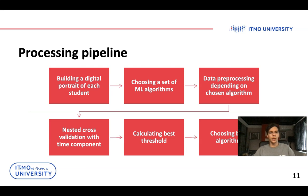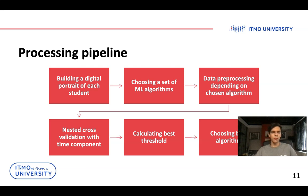After that, we applied artificial intelligence algorithms to predict targets using this digital portrait. First, we built a digital portrait for each student. Then we chose a set of machine learning algorithms and performed data preprocessing depending on the chosen algorithm — for example, different preprocessing pipelines for categorical features in tree-based versus linear algorithms. We then applied nested cross-validation with a time component, so as not to overfit on future data. Finally, we calculated the best threshold to separate classes and chose the best algorithm.